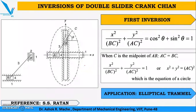In the first inversion, link 1 is fixed. Link 4, which is a slider, and link 2, which is also a slider, are connected by means of link 3. There is a turning pair between links 2 and 3 and links 3 and 4, whereas there is a sliding joint between link 2 and 1 and link 4 and 1. When link 1 is fixed, you get an equation of an ellipse when point C is on link AB, except at the center point.